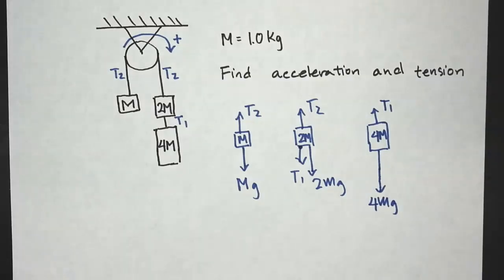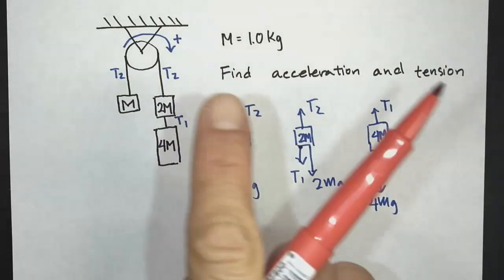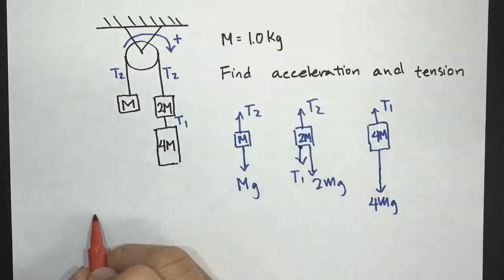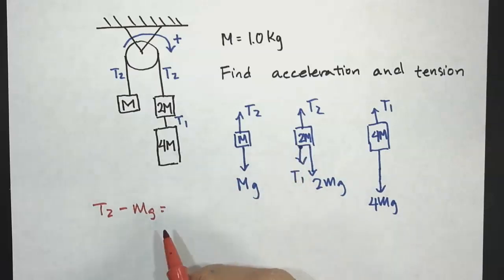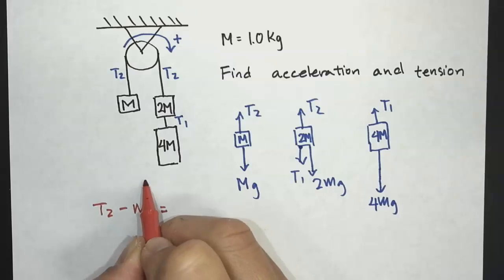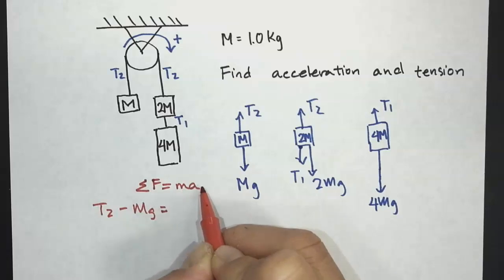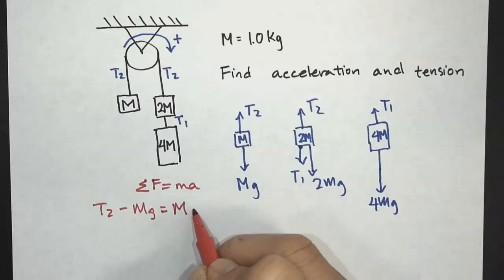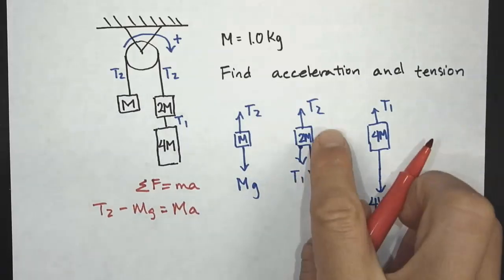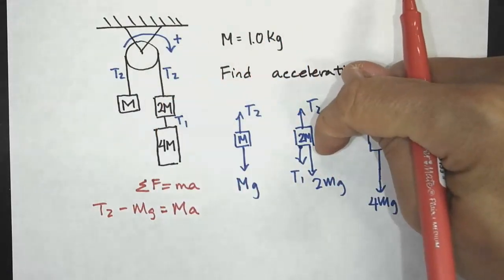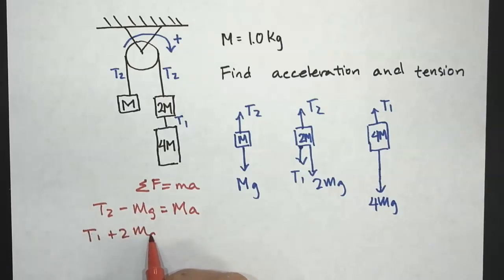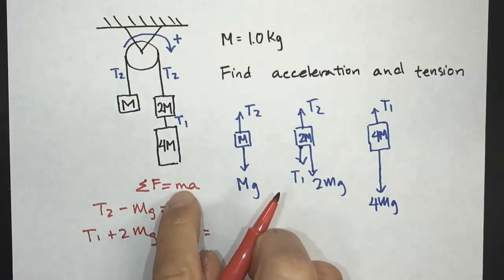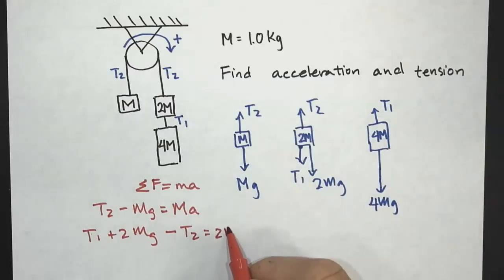Next we're going to write an equation for each of these masses. Starting with the first block: force down in the positive direction minus force in the negative direction gives T2 minus Mg equals Ma — that's Newton's second law, net force equals Ma, where M is the mass of the block. For the second block, force down minus force up gives T1 plus 2Mg minus T2 equals 2Ma, being careful that the mass here is 2M.